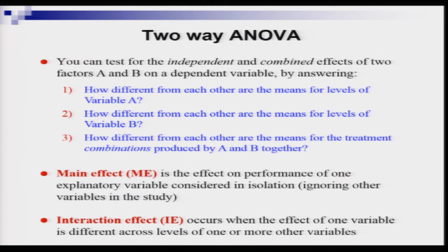Question one: how different from each other are the means for levels of variable A? We have a continuous dependent variable Y and a factor A with two levels. If we put our Y observations into the two groups A₀ and A₁, does that splitting have any impact on the mean Y value?